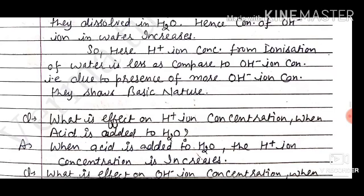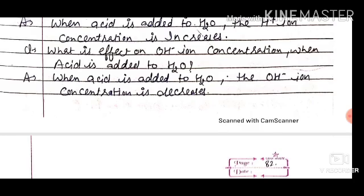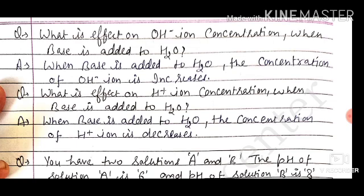What is the effect on H-ion concentration when acid is added to water? H-ion concentration starts to increase. What is the effect on OH-ion concentration when acid is added to water? OH-ion concentration decreases. When base is added to water, the concentration of OH-ion increases, and the H-ion concentration decreases.